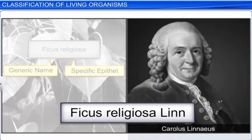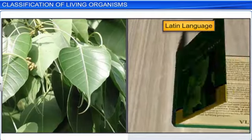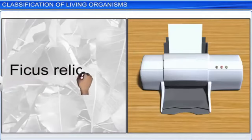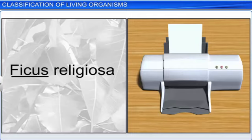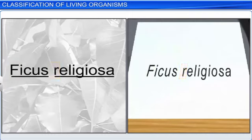Sometimes, the name of the author who first described the species is written at the end of the specific epithet. For example, in Ficus religiosa Lin, 'Lin' is the abbreviated name for Linnaeus. Moreover, scientific or biological names are generally in Latin or derived from Latin, irrespective of the origin of the organism. Also, when a scientific name is handwritten, both the words are underlined separately, whereas when printed, it is in italics to indicate its Latin origin. Finally, the first word of the genus starts with a capital letter, and the specific epithet starts with a small letter.